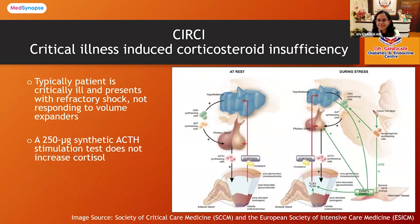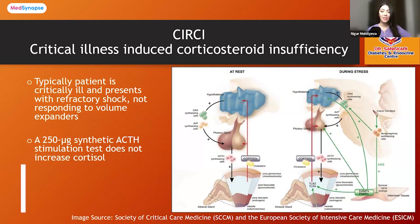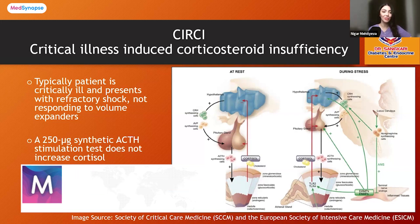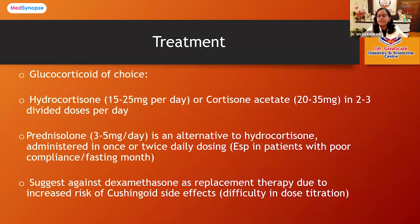Now, regarding the key considerations for managing adrenal insufficiency in terms of medication, lifestyle adjustments, and potential complications — we have already covered acute management of adrenal crisis with IV hydrocortisone. Let's now look at treatment for patients who are more stable and present with adrenal insufficiency.